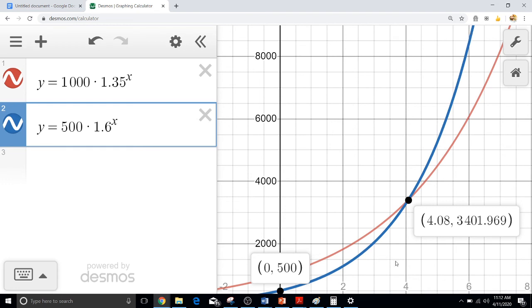So again, up until right around the fourth month, the first equation is actually going to be better. But then just a little bit after the fourth month, right at about the $3,401.97 mark, this one actually surpasses the first one.